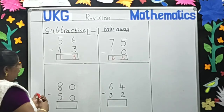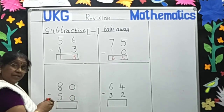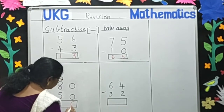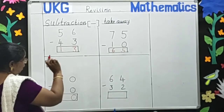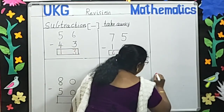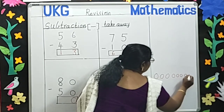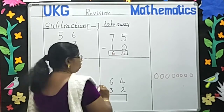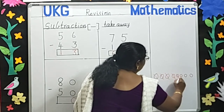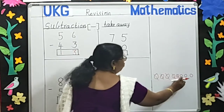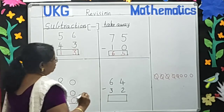Now next one is 80 minus 50. 0, 0 is always 0, so we will write 0 here. Now children, we will use another method. This is 8, this is 5. Let's make 8 circles. Now we will minus 5. How many circles are left children? 1, 2, 3. So 8 minus 5 is 3. Answer is 30.